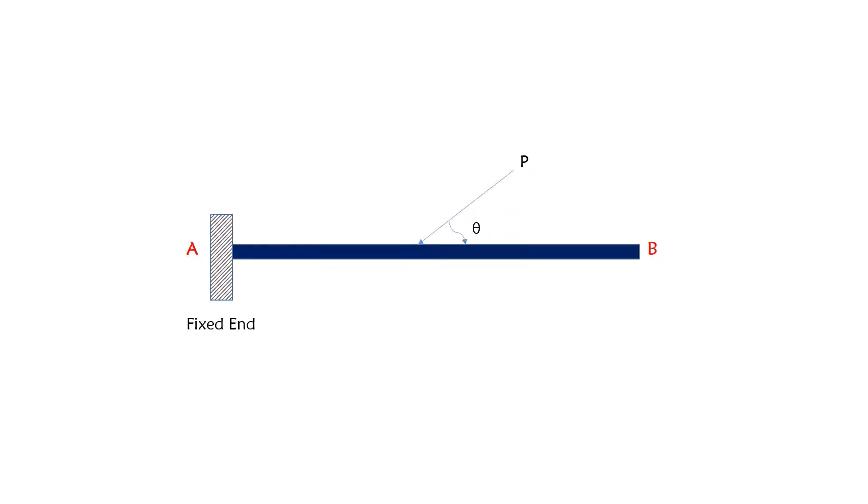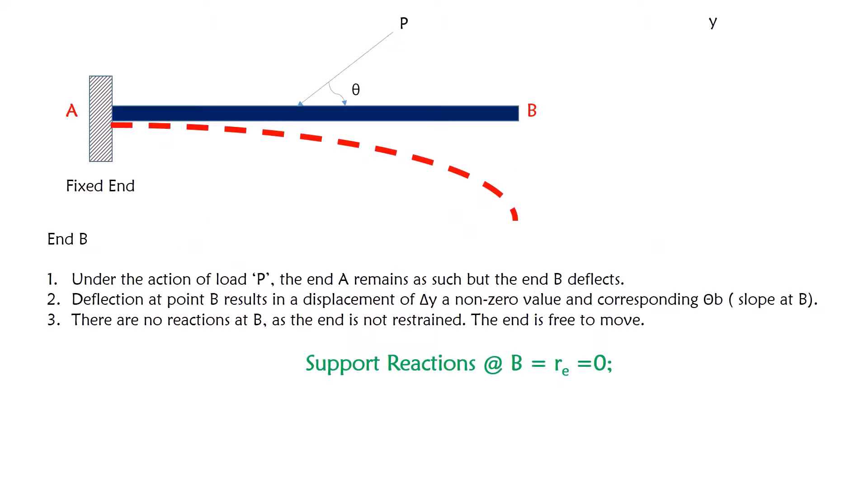Under the action of load P, the deflection pattern followed by a cantilever beam as shown in the figure. We will concentrate on each end and find out what will be the reactions at the ends. Our first area of focus is end B where the end B is a free end. Under the action of load P, there is a deflection happening in the beam. But there is no deflection at the point A as the A end is fixed.